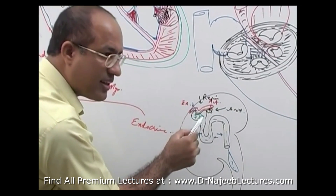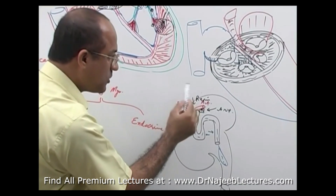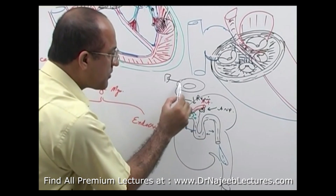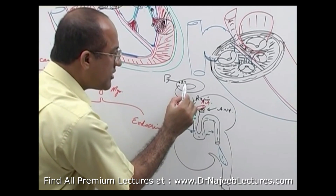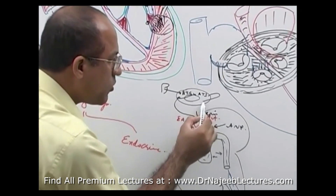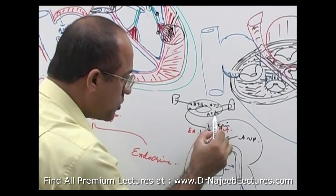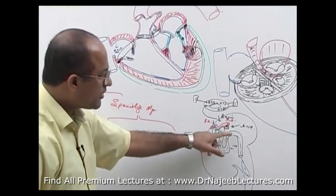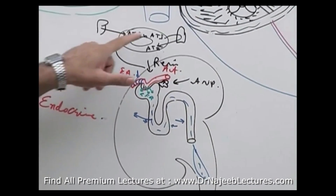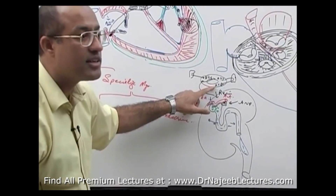Number two: atrial natriuretic peptide reduces the production of renin from the juxtaglomerular apparatus. Renin normally converts angiotensinogen — coming from the liver — into angiotensin 1. Angiotensin 1, when it passes through the lung capillaries, is converted into angiotensin 2. When atrial natriuretic peptide is elevated, it reduces renin production, so conversion of angiotensinogen into angiotensin 1 decreases, then angiotensin 2 in the blood becomes less.